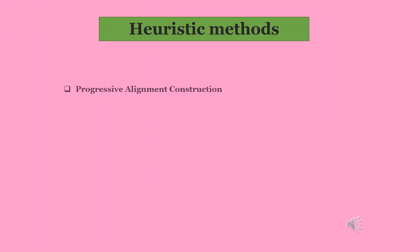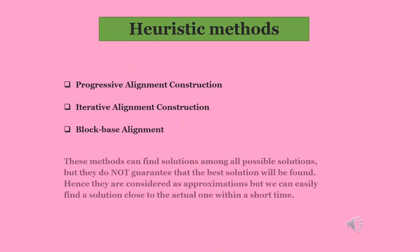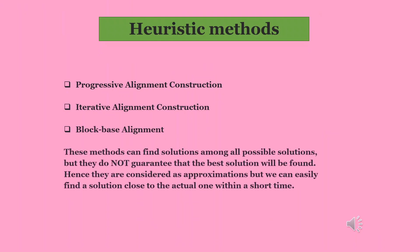So, let us move to heuristic methods. The various heuristic methods are: 1. Progressive alignment construction. 2. Iterative alignment construction. 3. Block base alignment. These methods can find solutions among all possible solutions, but they do not guarantee that the best solution will be found. Hence, they are considered as approximations but we can easily find a solution close to the actual one within a short time.